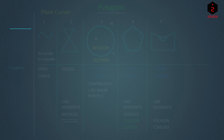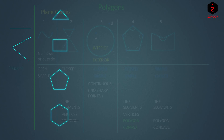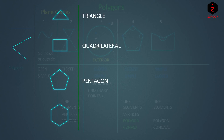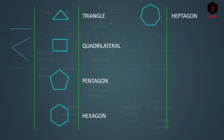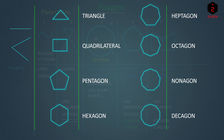Without sides and vertices there is no polygon. We cannot draw a polygon with one or two sides — it will not be a closed curve. We can however draw a polygon with three, four, five, six, or more sides, and based on the number of sides we give different names. A polygon with three sides is a triangle, four sides a quadrilateral, five sides a pentagon, six a hexagon, seven a heptagon, eight an octagon, nine a nonagon, ten a decagon, and so on.